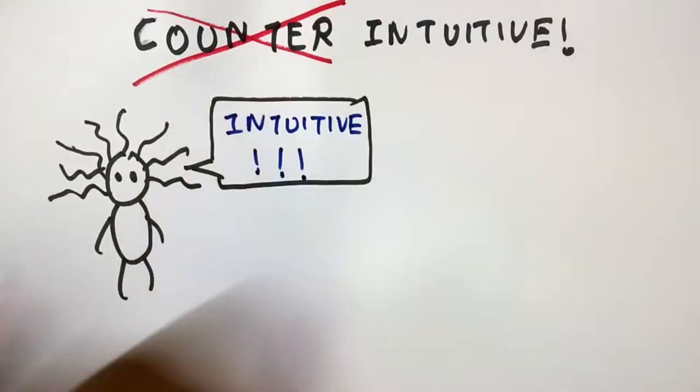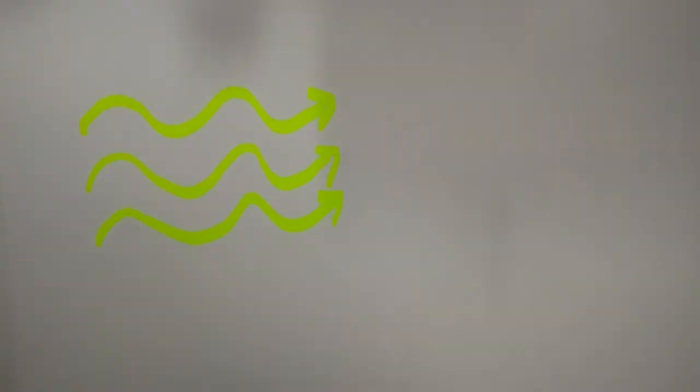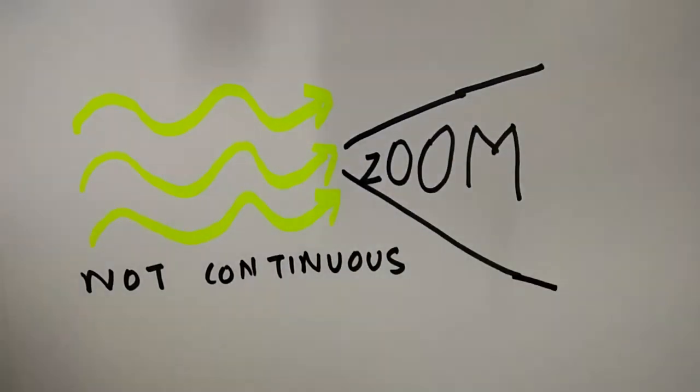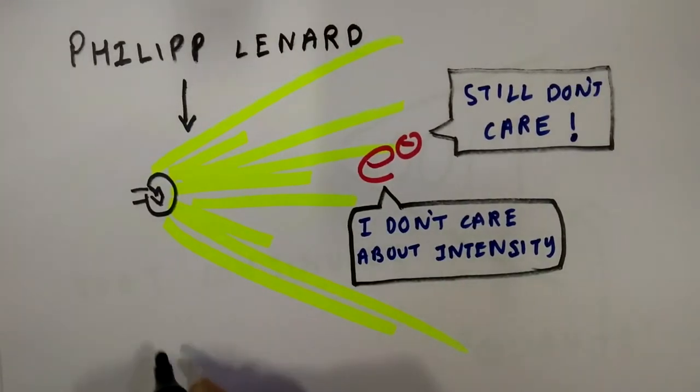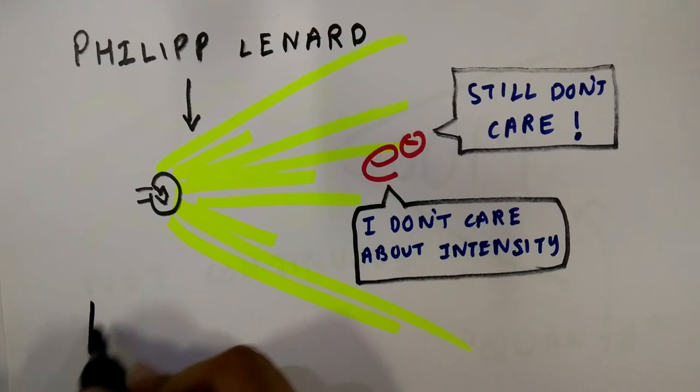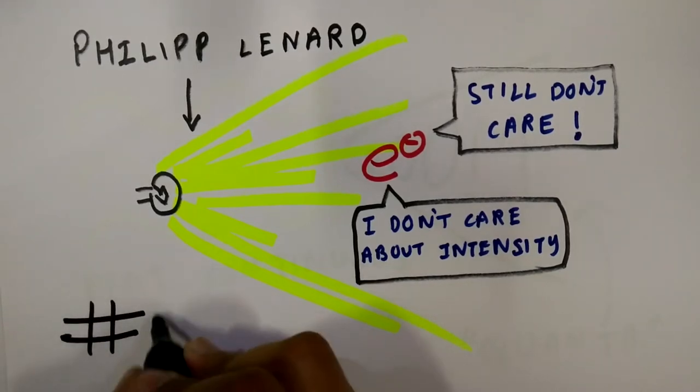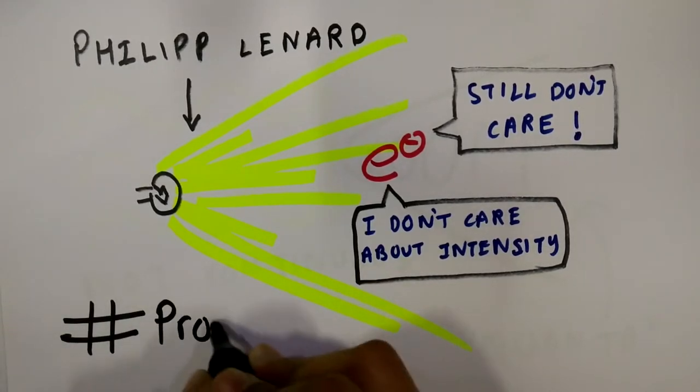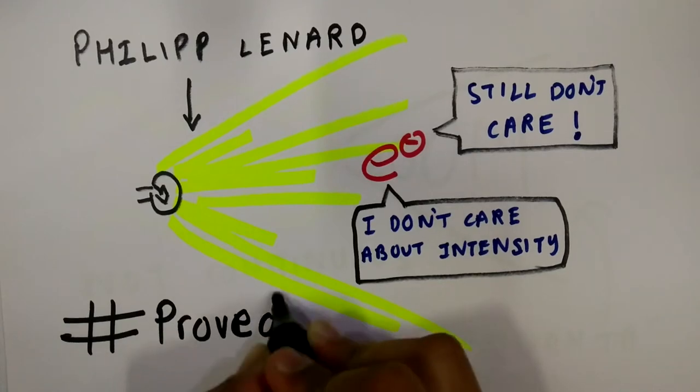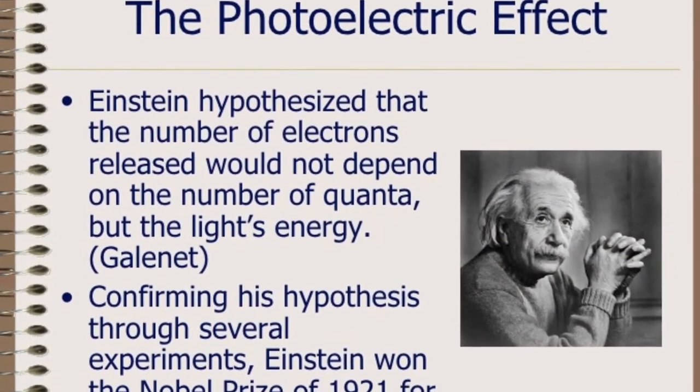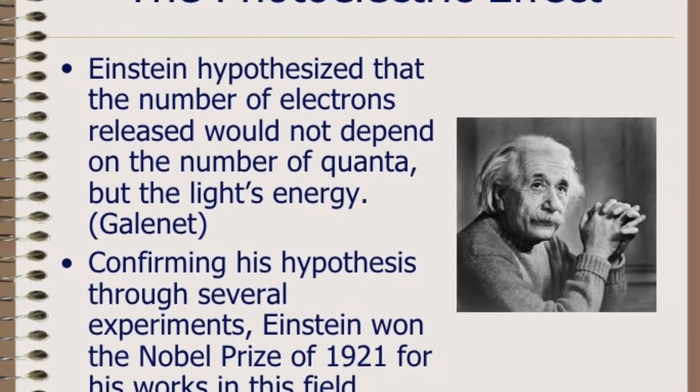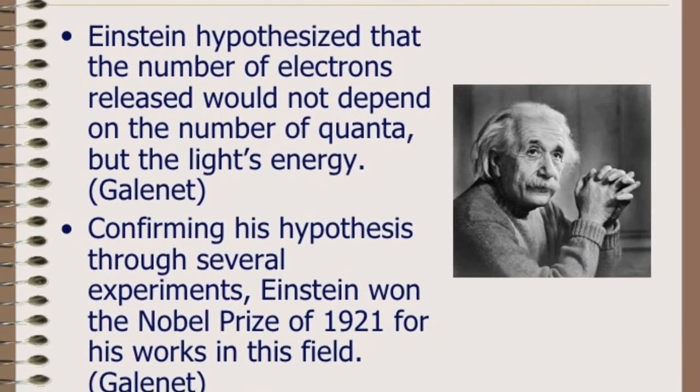Well, Einstein figured this out. He assumed that light is not continuous like a breeze or a tornado. It is actually made up of discrete particles known as quanta. Higher intensity of light does not mean more number of quanta. It actually means more energetic quanta. So even if you shine bright intense light on the metal surface, the number of photons or quanta still remain the same. And thus the intensity of light had no effect on the emission of electrons whatsoever.